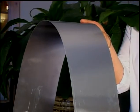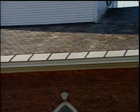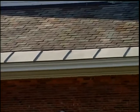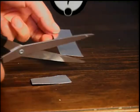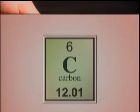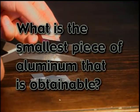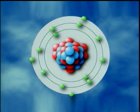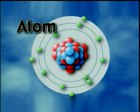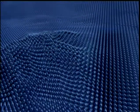This is a piece of aluminum flashing. It's made up mostly of the element aluminum. Aluminum flashing is commonly used on roofs to help rain and snow slide off easily. Let's cut this piece of aluminum in half, and then in half again. You decide what's the smallest piece of aluminum that's obtainable. The smallest piece of aluminum we could obtain is an atom. An atom is the smallest possible part of an element. We cannot see the atoms in this piece of aluminum with the naked eye, but we know that all matter is made up of atoms.